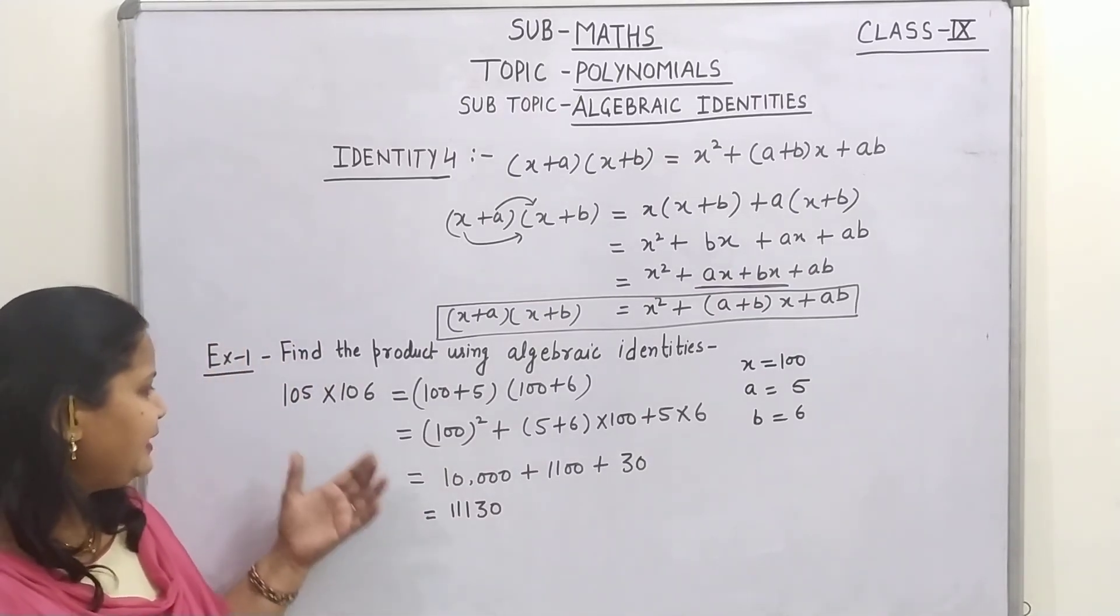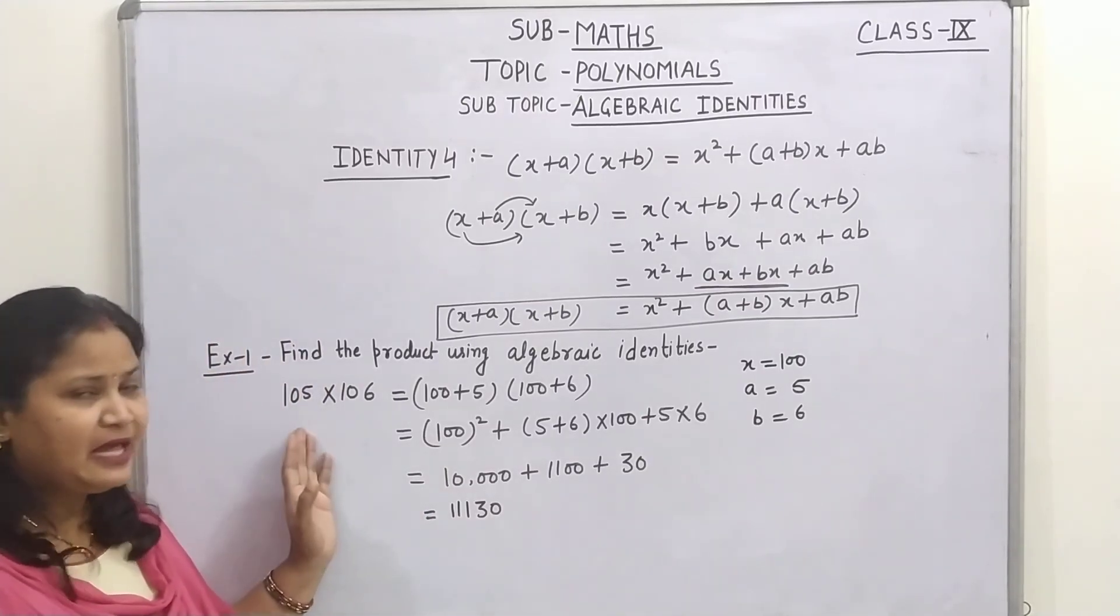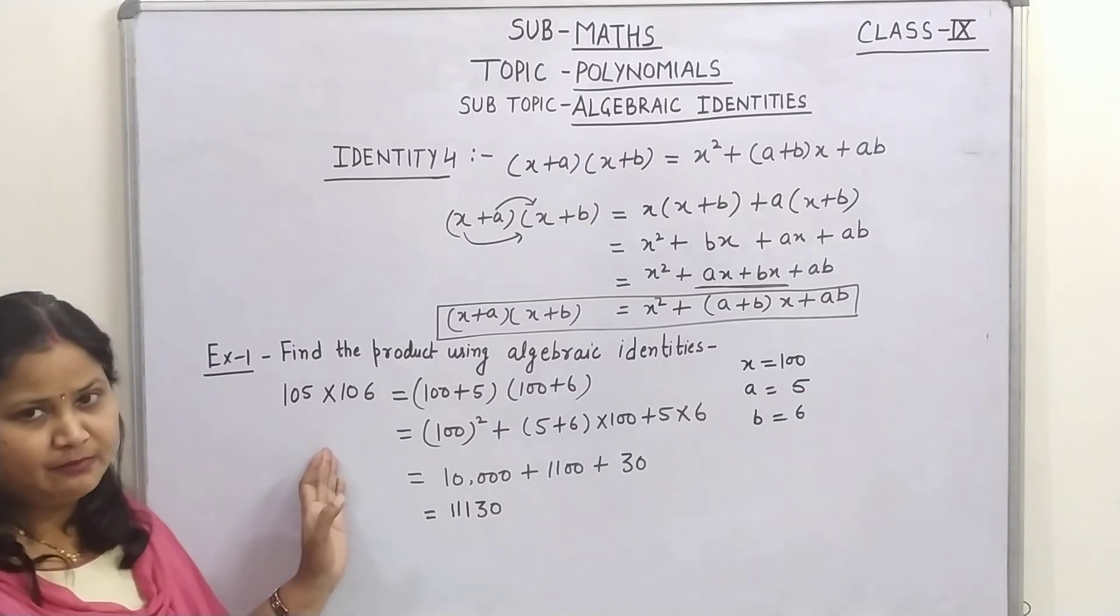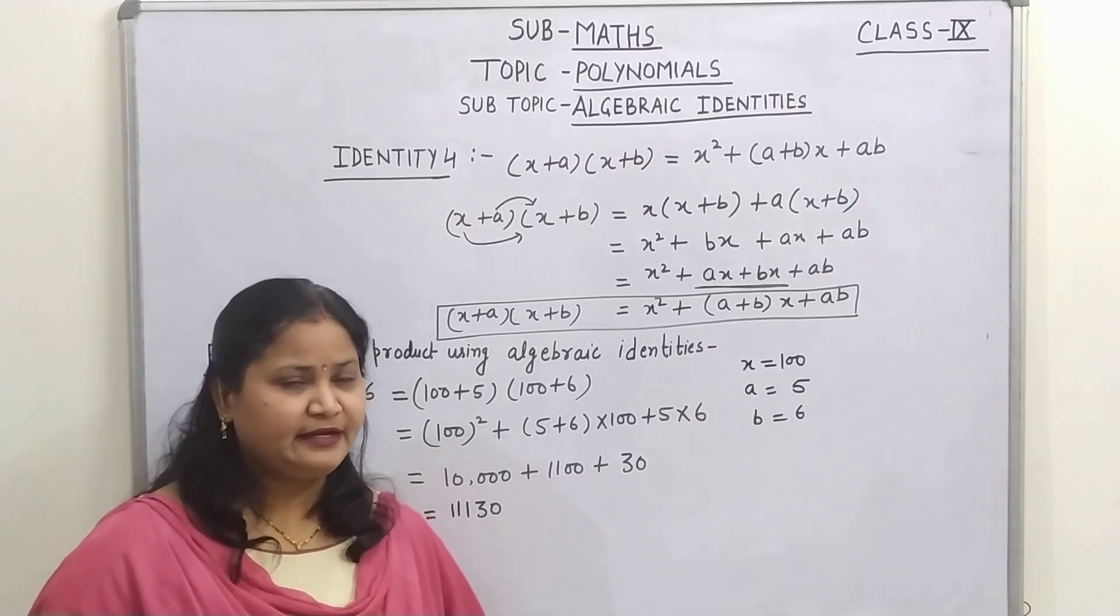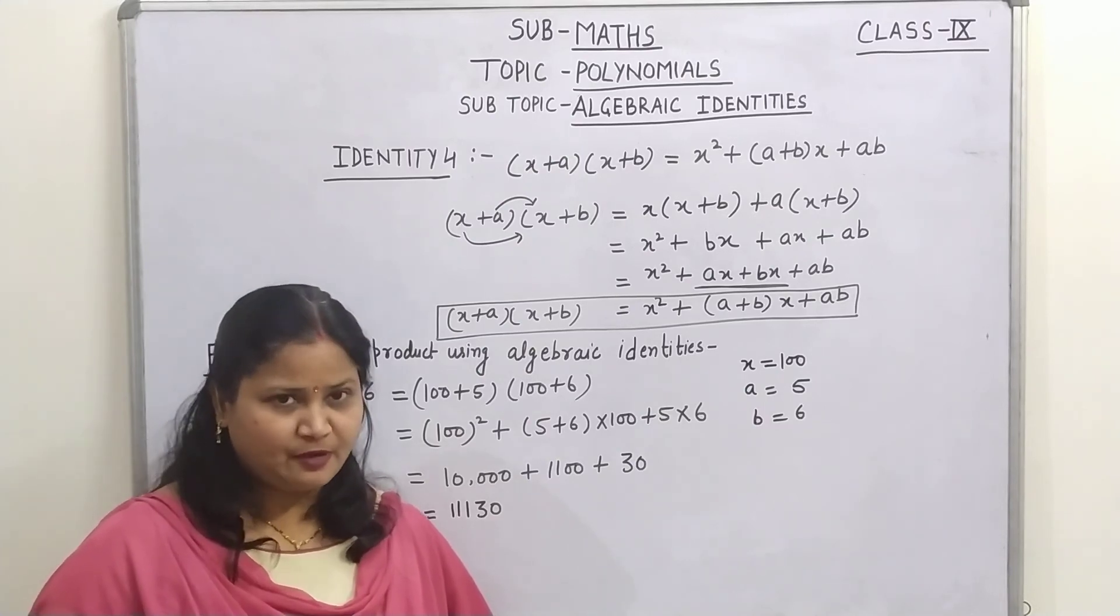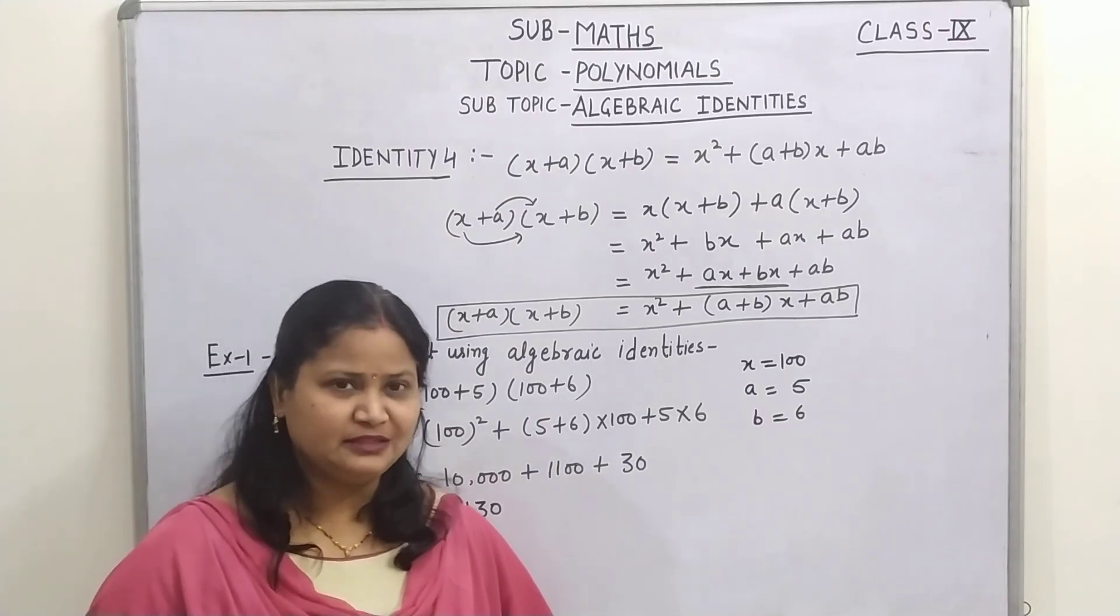So children, you find a product without multiplying both the numbers. So children, in this way you can use the identities to simplify your problems. We will continue it tomorrow. Thank you.